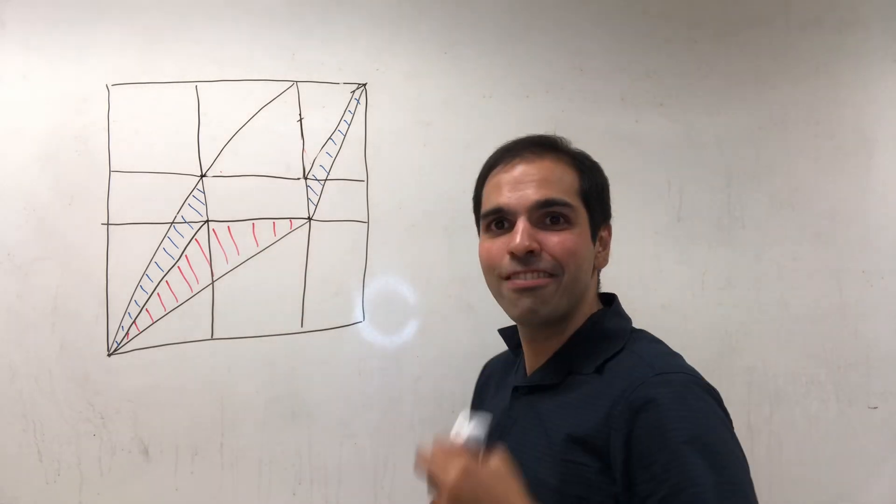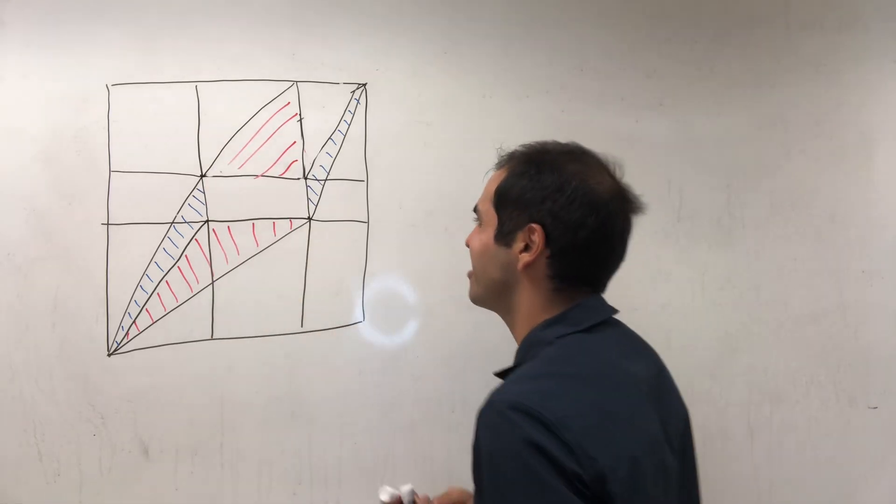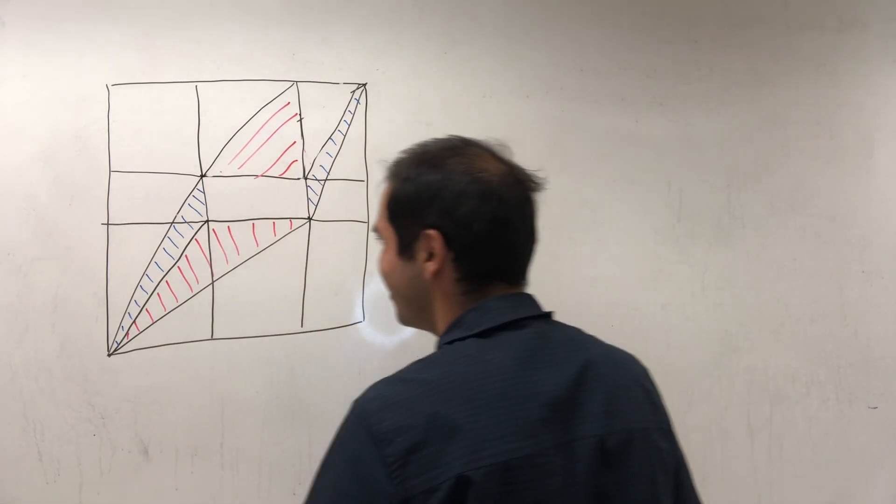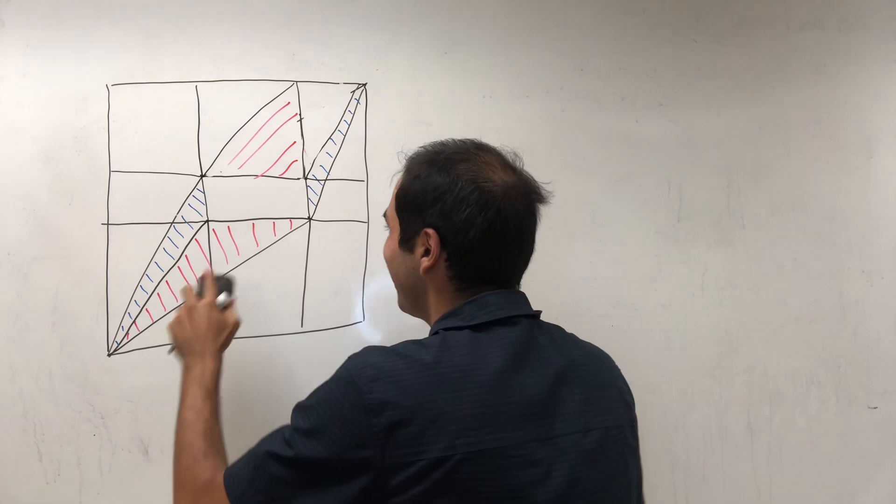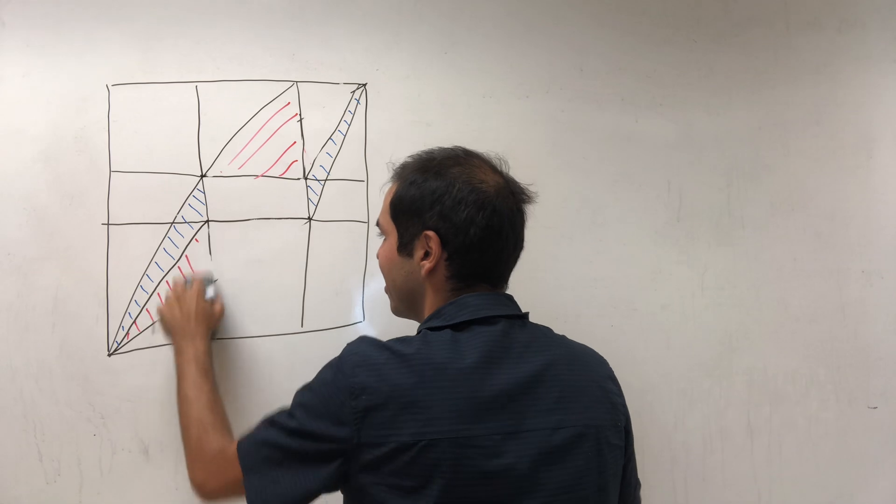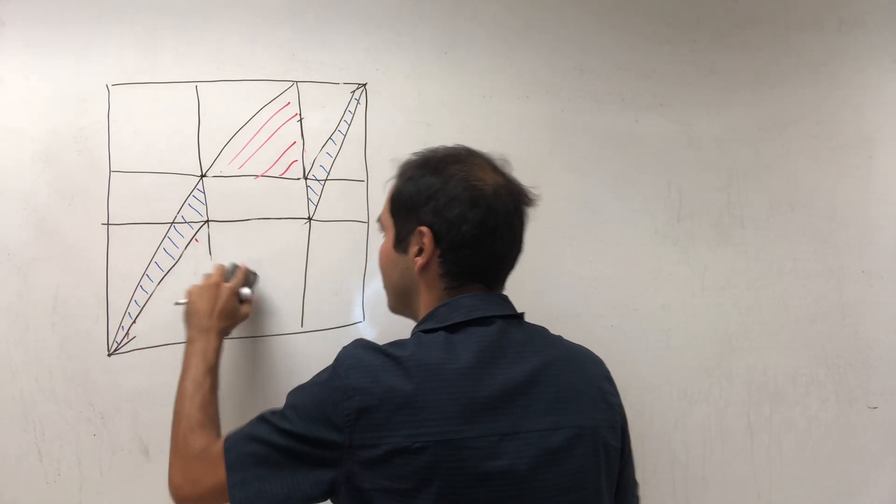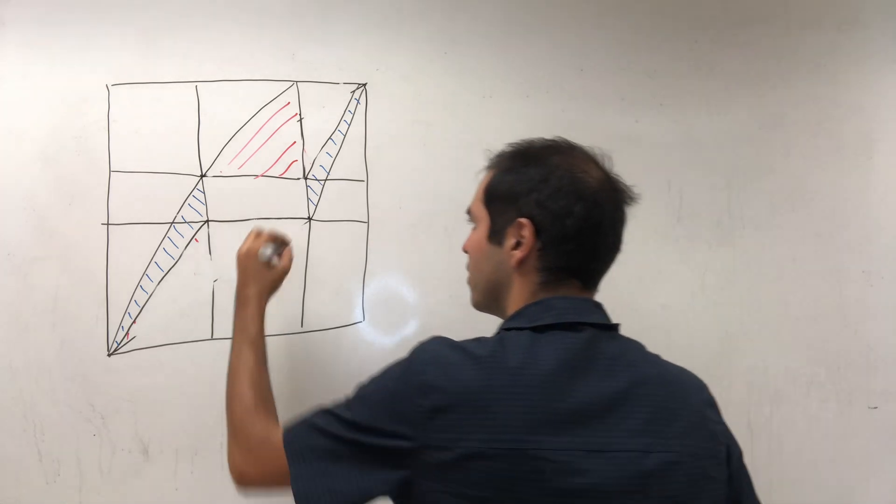And again, I wish I was like 3Blue1Brown where I can just give you a computer simulation. Okay, and similarly here, we get that the area of this red triangle is actually one half of the area of this rectangle, kind of like this.